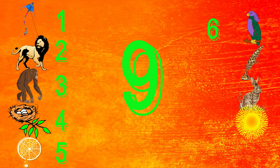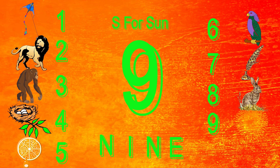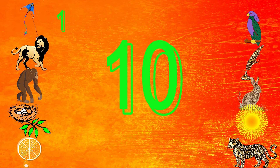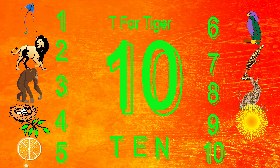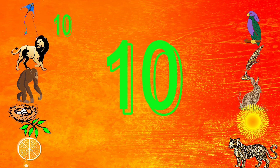9 - N I N E. 9 - S for sun. 10 - T E N. 10 - T for tiger. Countdown: 10, 9, 8, 7, 6, 5, 4, 3, 2, 1.